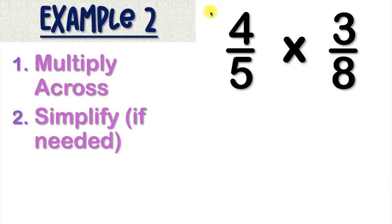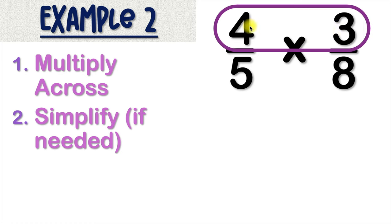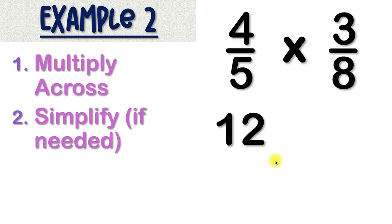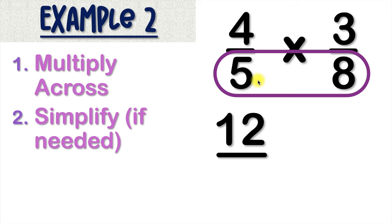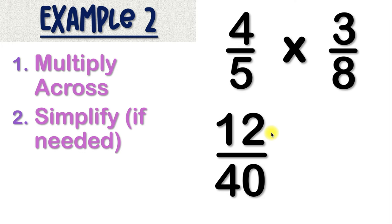Here's example 2. We've got 4 over 5 times 3 over 8. Let's multiply across the top of our fraction. Which means we need to multiply 4 times 3. When we do that, that gives us 12. Then we can write our fraction line under the 12 and multiply across the bottom. And 5 times 8 gives us 40. So now our answer is 12 over 40. So we're done multiplying, which means we're done with step 1.